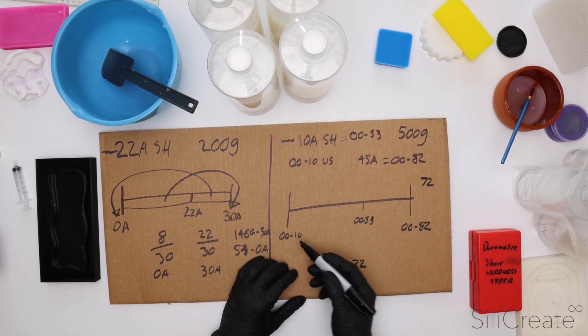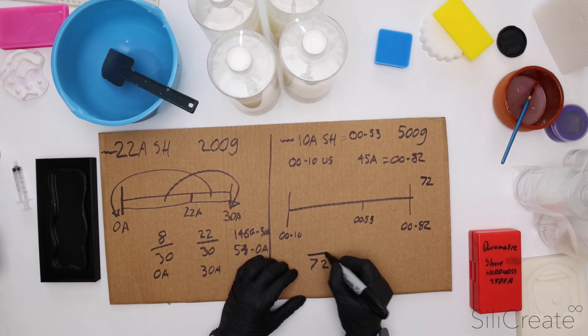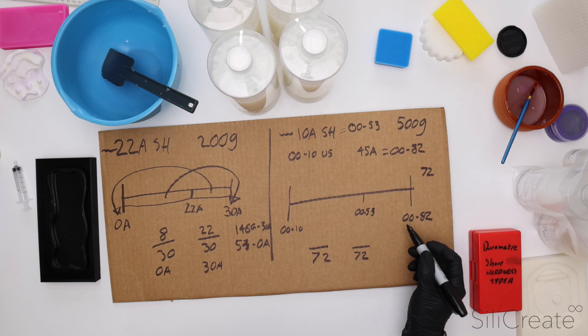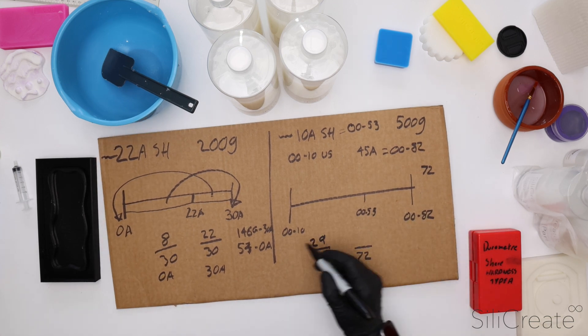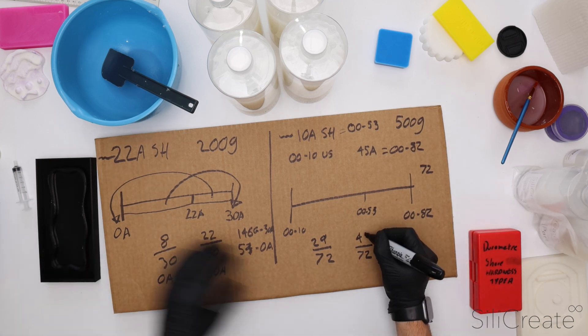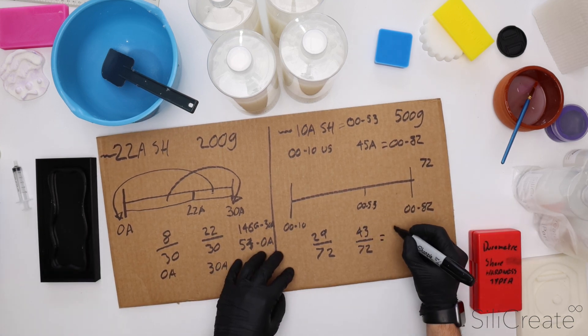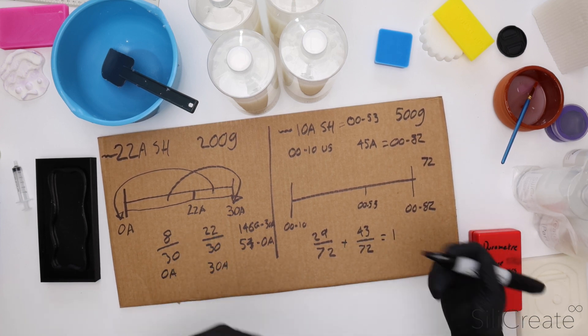Because we take 82 and we minus 10 off it essentially. And so we've got 72. That's going to be our denominator. So we take the difference between 82 and 53, which is 29. And we take the difference between 10 and 53, and so we get 43. And these should equal to 1. If you plus these together, they should equal to 1, just if you need to check your maths.